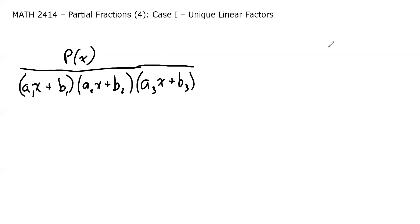When I say unique, I mean that no two of these are the same. So it's not the case that A1 equals A2 and B1 equals B2. In other words, we can't have like 2X plus 1 and another 2X plus 1. Those aren't unique. Those are the same. But no two of the factors are the same.